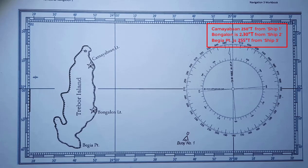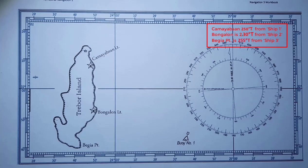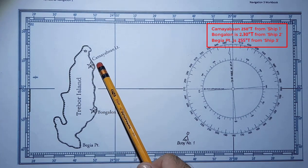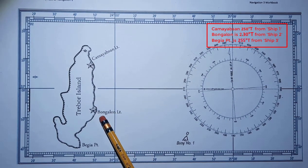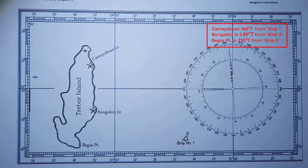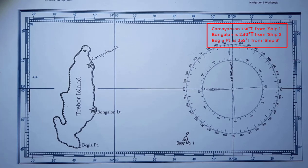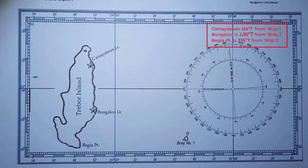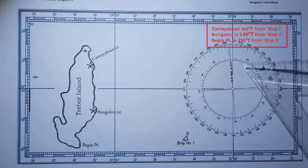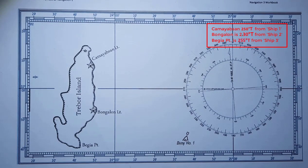Let's plot the LOP of Ship 1, which references Kameyam Sun point. This is Kameyam Sun, this is Bungalun, and this is Behia point. In determining the LOP from the position of your ship, it's a very easy task. We are using the compass rose and, of course, the very reliable pair of triangles.